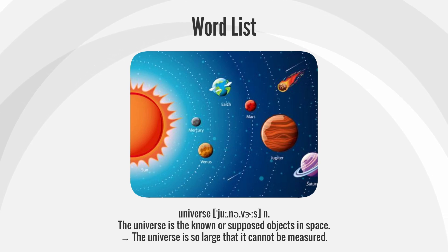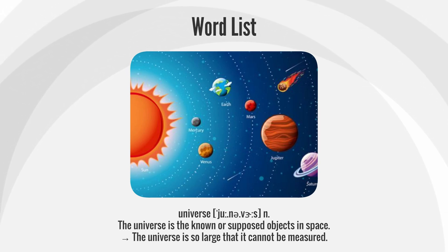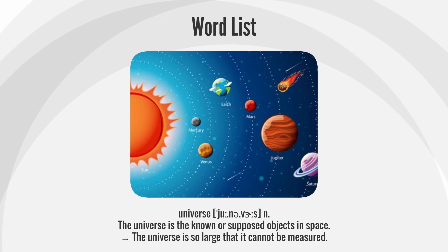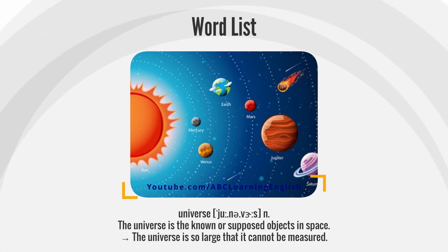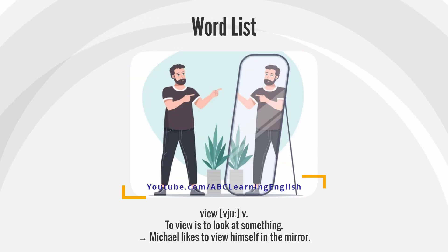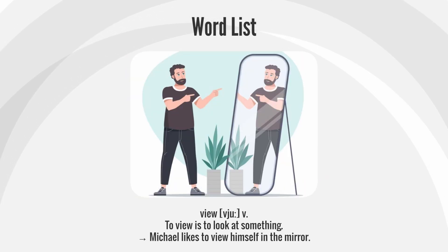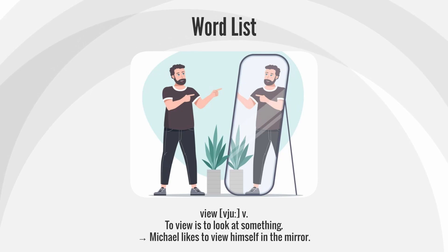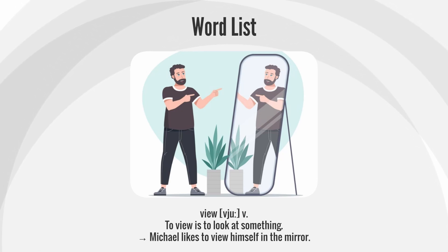Universe: The universe is the known or supposed objects in space. The universe is so large that it cannot be measured. View: To view is to look at something. Michael likes to view himself in the mirror.